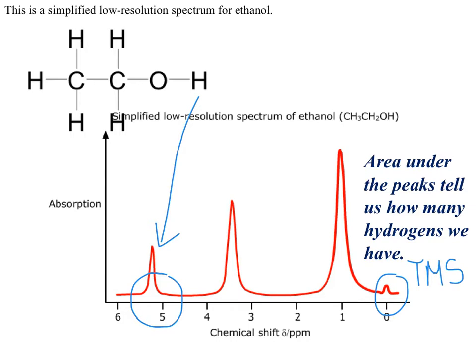Let's consider the word 'deshielded'. When a hydrogen atom is placed into a magnetic field, the electrons in the atom produce a magnetic field that opposes the applied field coming from the NMR machine — this is known as shielding. So if we're attached to an electronegative atom, it deshields the hydrogen atom, really interfering with the magnetic field that the hydrogen atom is producing. Getting used to using the word deshielding is a great way to collect marks in the exam.